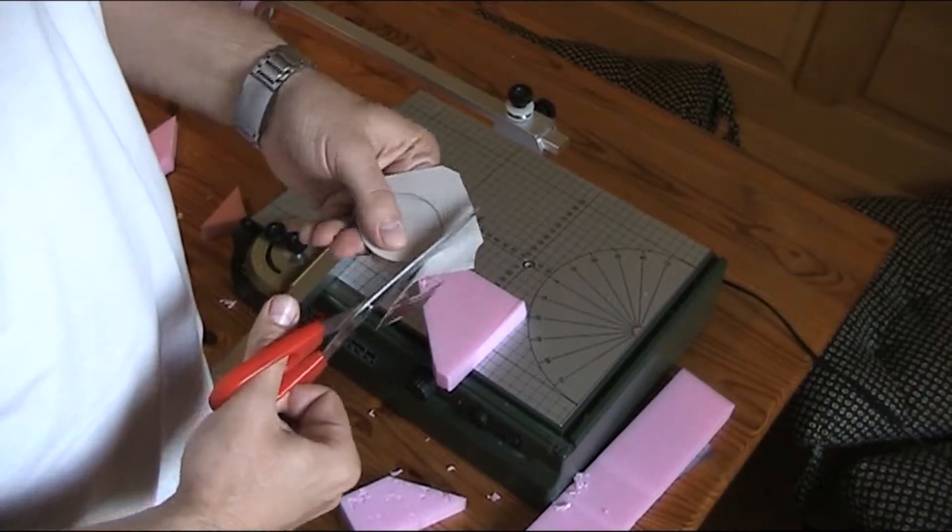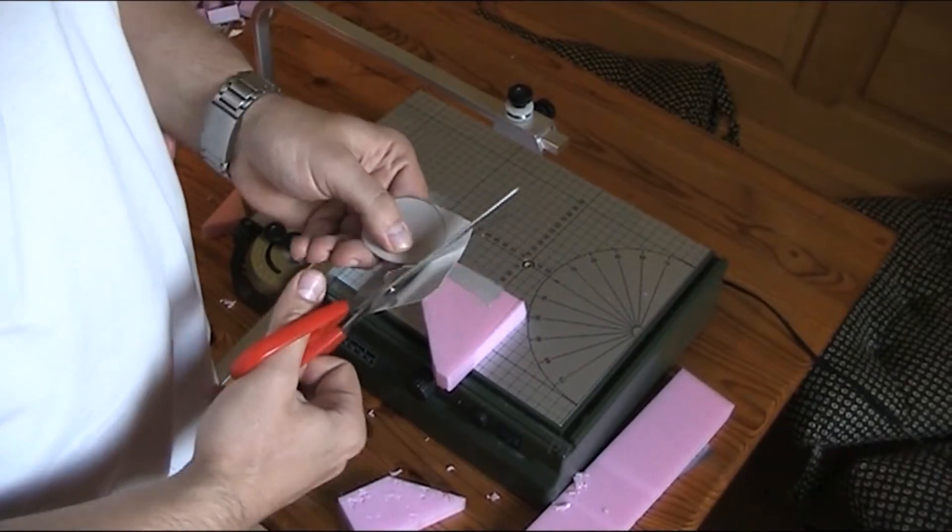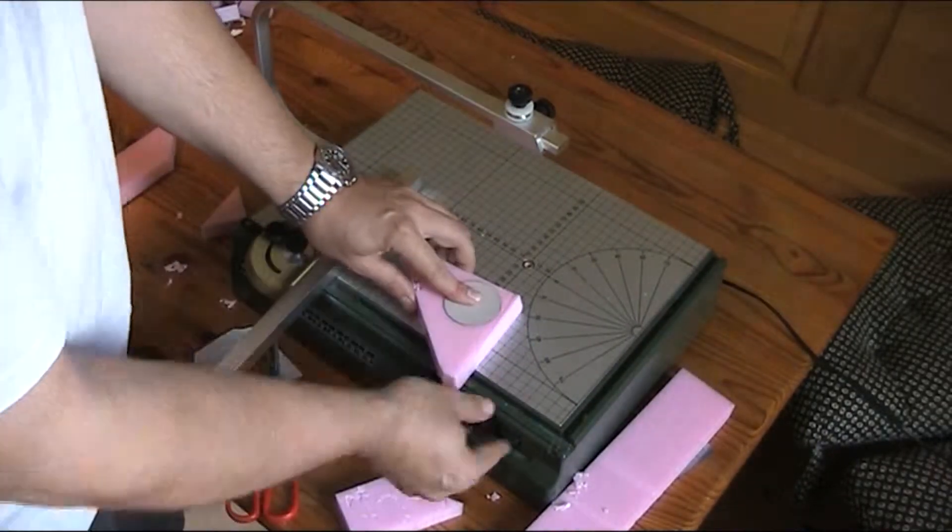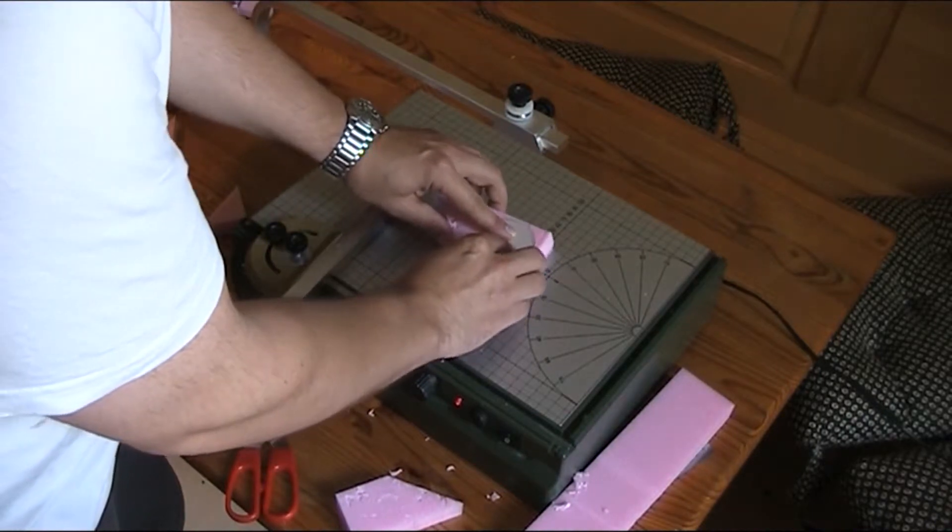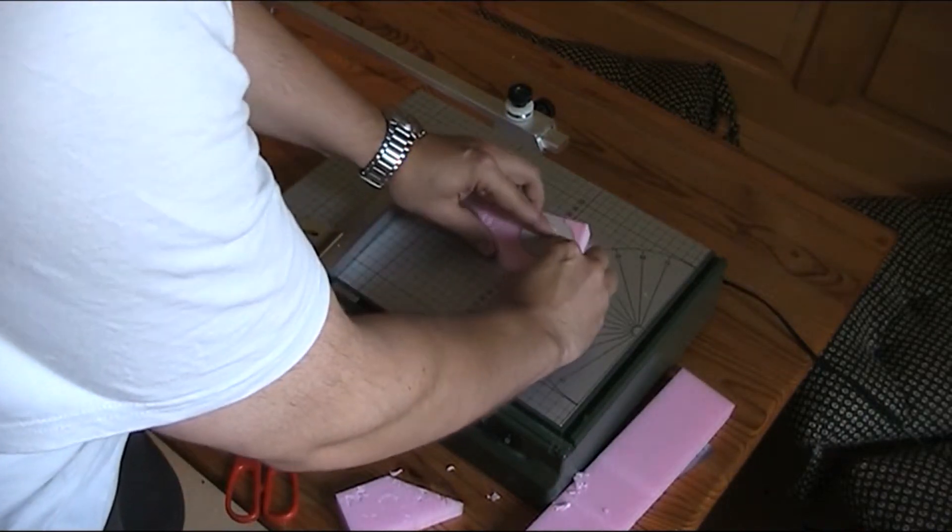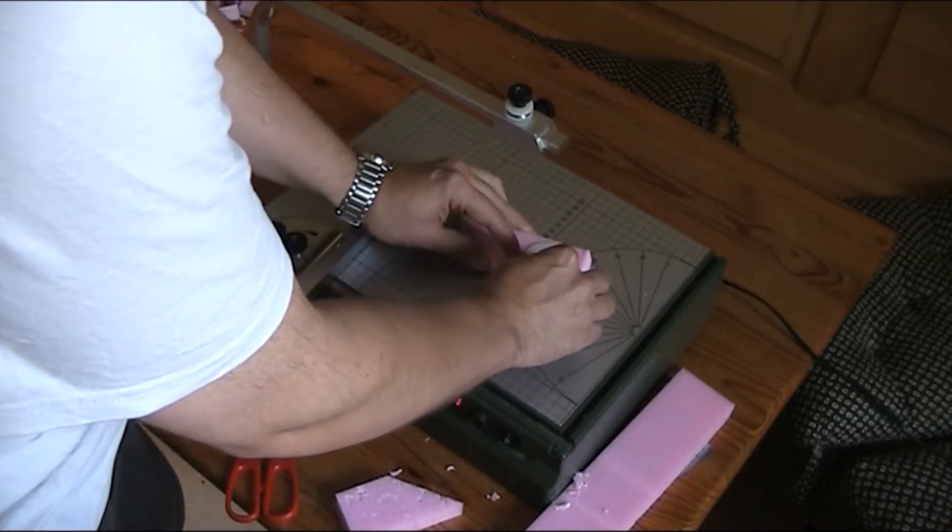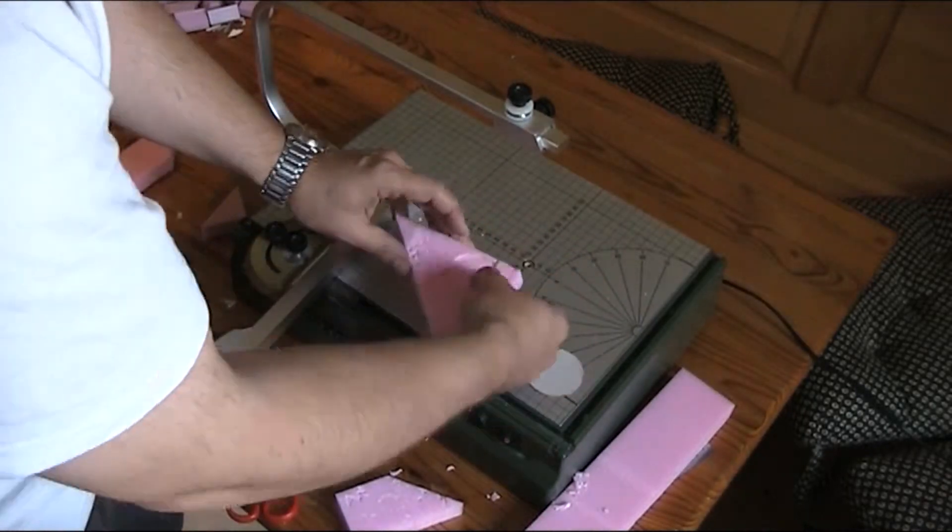When using the hotwire cutter, you can always make templates out of cardboard. The wire will only cut through the material and not through the cardboard, so you can use your template again to make the exact same tile twice.